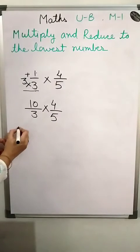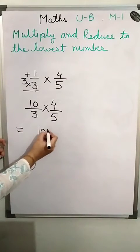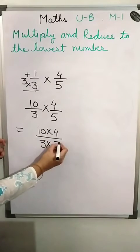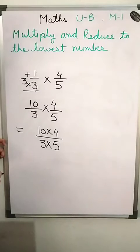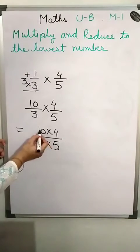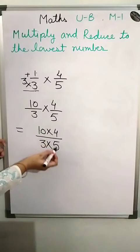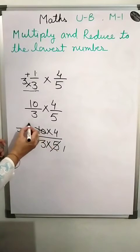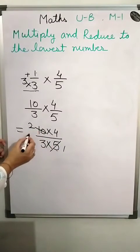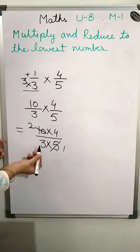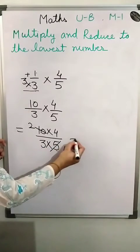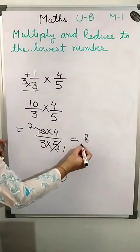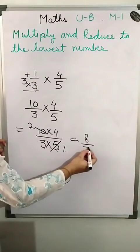Multiply numerator to numerator and denominator to denominator. Check for reductions: 5 and 10 — 10 is a multiple of 5, so we reduce them. 5 ones are 5 and 5 twos are 10. Now 3 is a prime number so it is not a multiple of anyone. 2 into 4 is 8, and 3 into 1 is 3. So we have 8 upon 3.